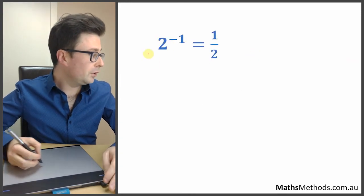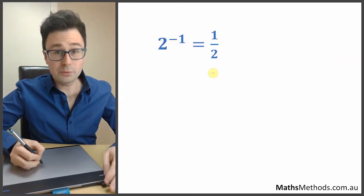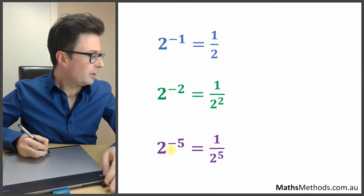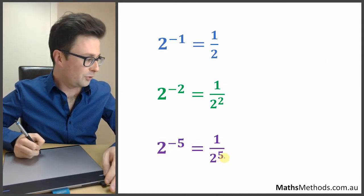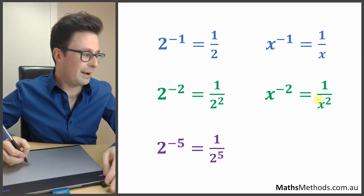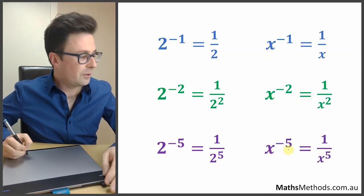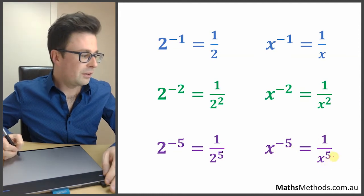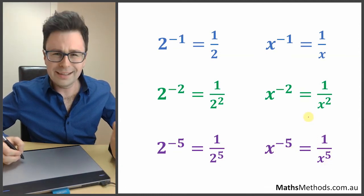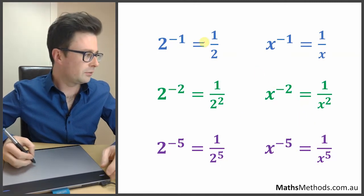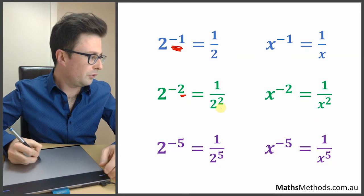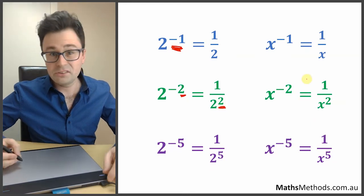A quick note on negative exponents: 2 to the power of negative 1 is 1 over 2. 2 to the power of negative 2 is 1 over 2 squared. 2 to the power of negative 5 is 1 over 2 to the power of 5. Similarly, x to the power of negative 1 is 1 over x, x to the power of negative 2 is 1 over x squared. Just remember: when you've got a negative exponent, it goes to the bottom, and the power remains.